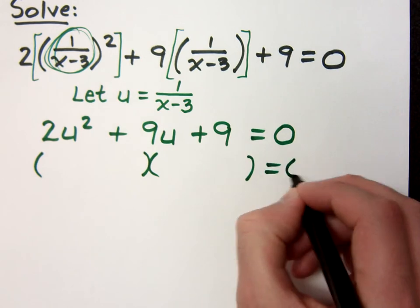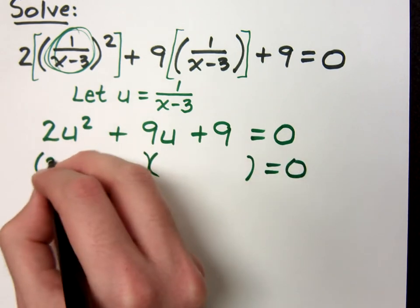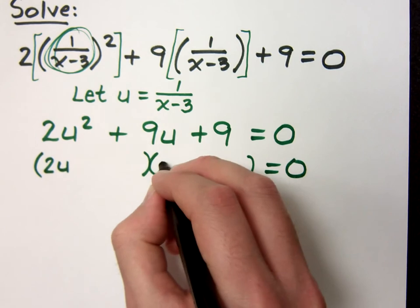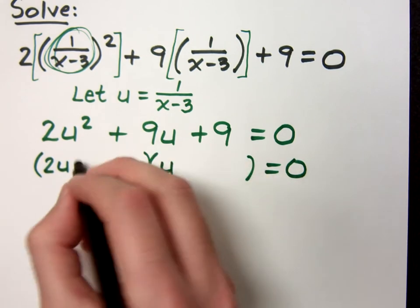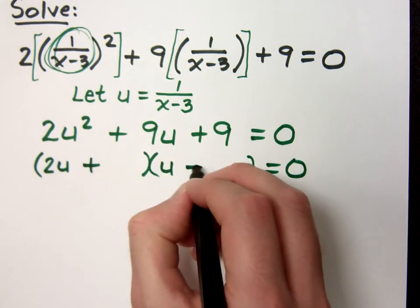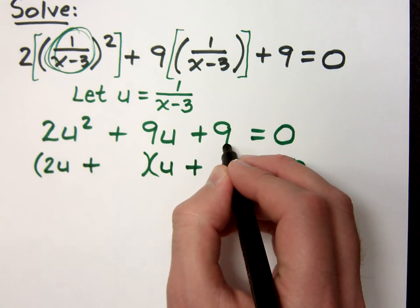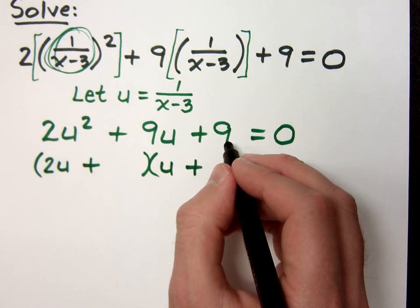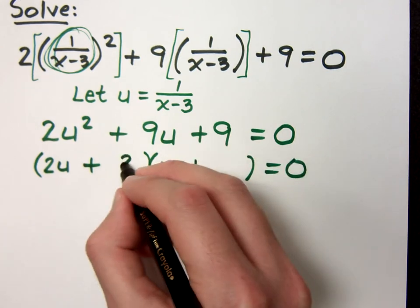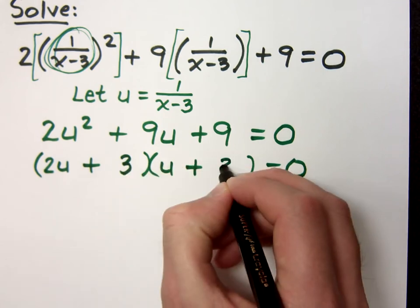There's no common factor other than 1. 2u squared has to break down as 2u times u. And notice that everything here is positive. Now, when I break down the 9, I've got 1 and 9 or 3 and 3. But very quickly, you realize that the combination has to be 3 and 3.